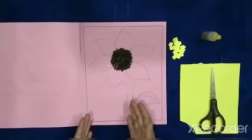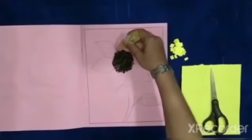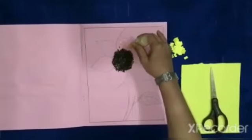See, I have pasted the tea leaves in the middle portion of the sunflower. After that, I have made small pieces of yellow paper with the help of scissors. Now I will put some glue in each petal like this.